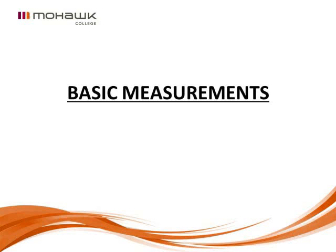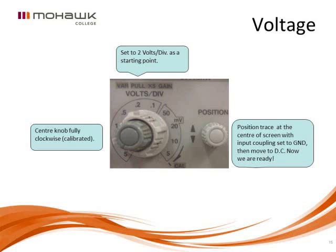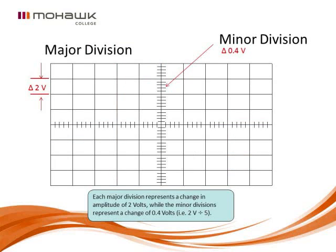To measure voltage, set up the volts per division. In this example, we set the vertical selector dial to two volts per division as a good starting point. The position knob is used to move the trace vertically up and down on the screen. With the control set to two volts per division, every major square represents a change of two volts. Each major division is subdivided into five minor divisions, so two divided by five gives 0.4 volts per minor division.